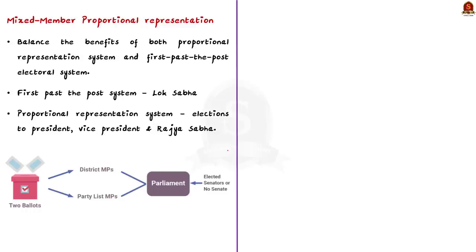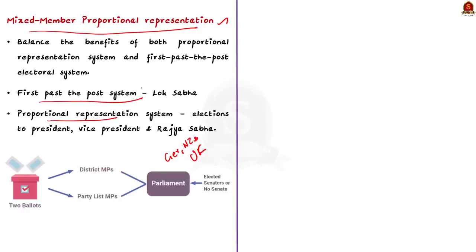Firstly, what is the mixed member proportional representation system? It is a type of electoral system used in several countries like Germany, New Zealand and parts of the United Kingdom. It is designed to balance the benefits of both the proportional representation system and the first-past-the-post electoral system. In the mixed member proportional system, voters have two votes.